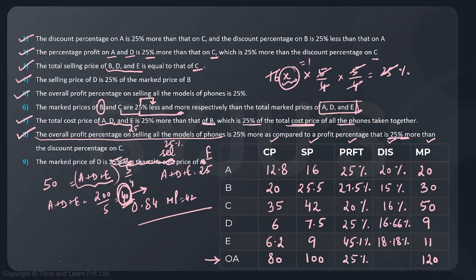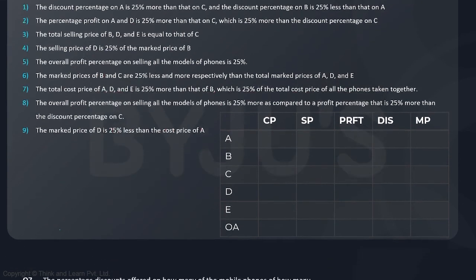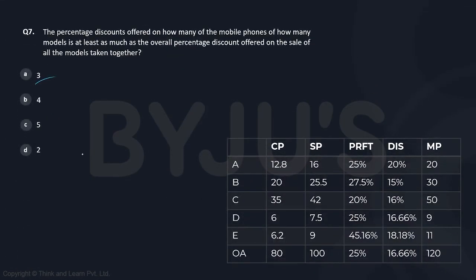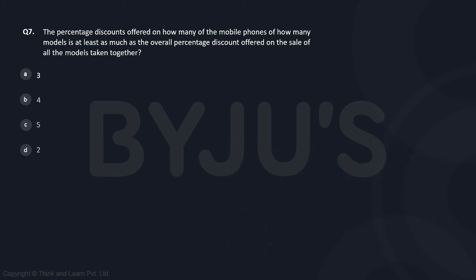Once the table is complete, we can answer the questions. Question: the percentage discount offered on how many models is at least as much as the overall percentage discount offered? Overall marked price is 120, selling price is 100, so discount is 20 on 120 = 16.66%. Models where discount ≥ 16.66%: for three of them it is greater than or equal. So the answer is option A — 3.